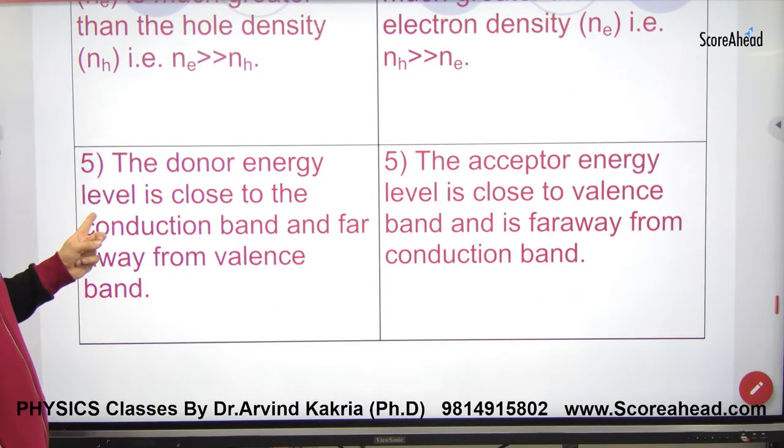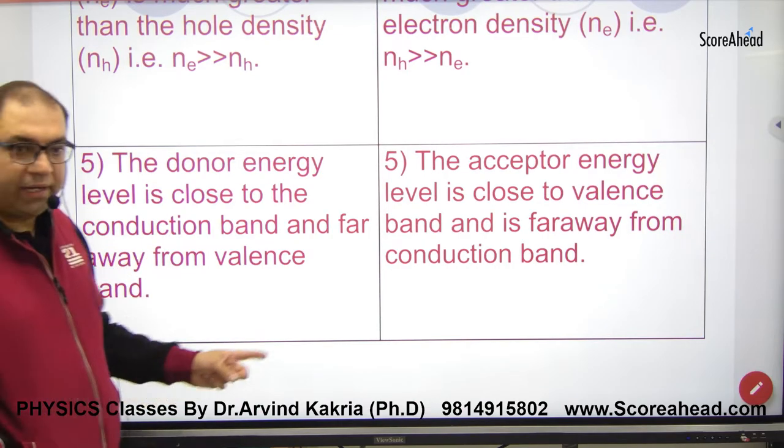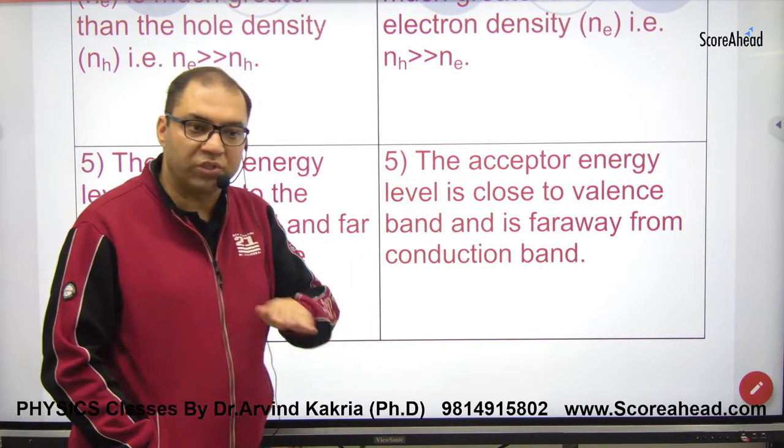In n-type, the donor energy level is close to the conduction band. In p-type, the acceptor energy level is close to the valence band.